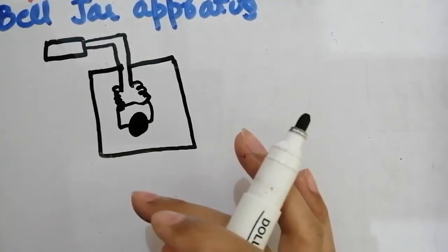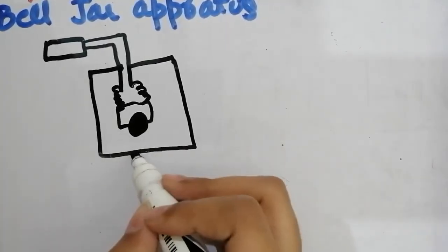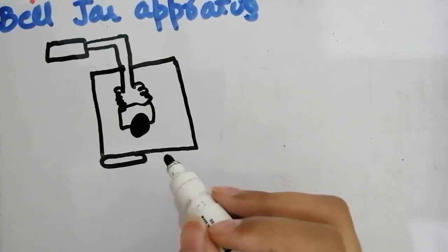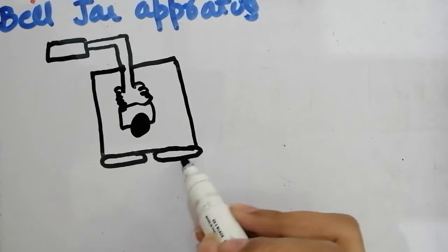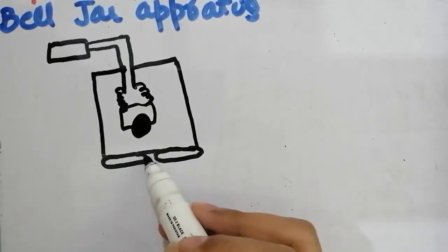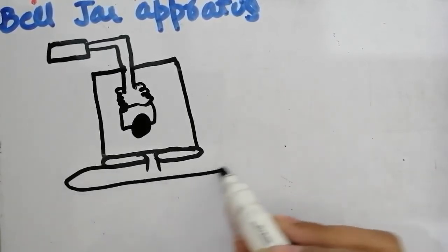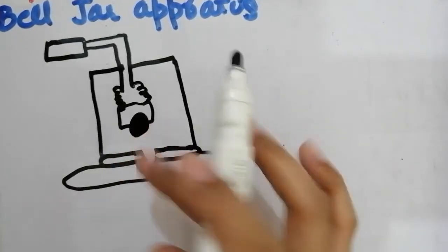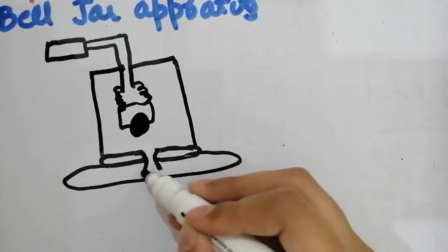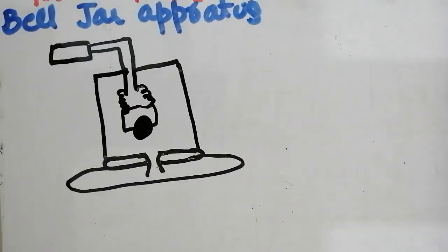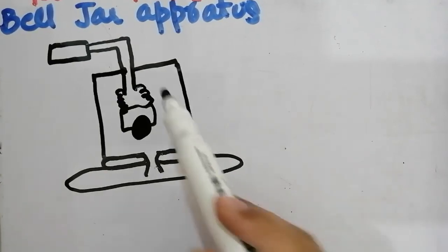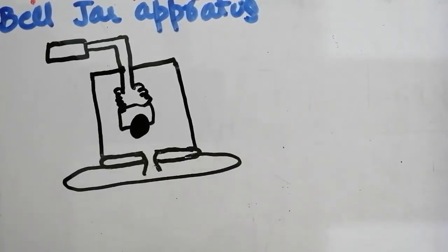Now, this bell jar apparatus will be placed on a vacuum pump. The work of the vacuum pump is that when it is attached, it will remove the air — it will suck the air out. So first of all, the jar will be filled with air.